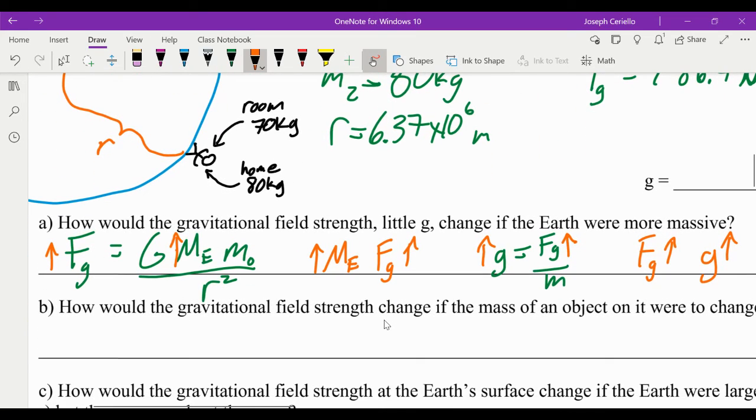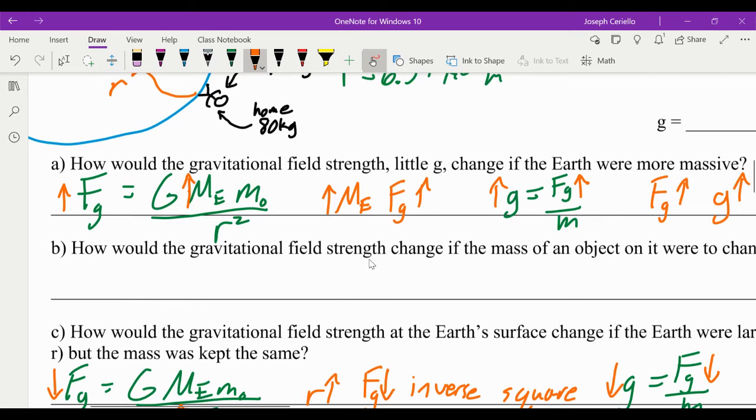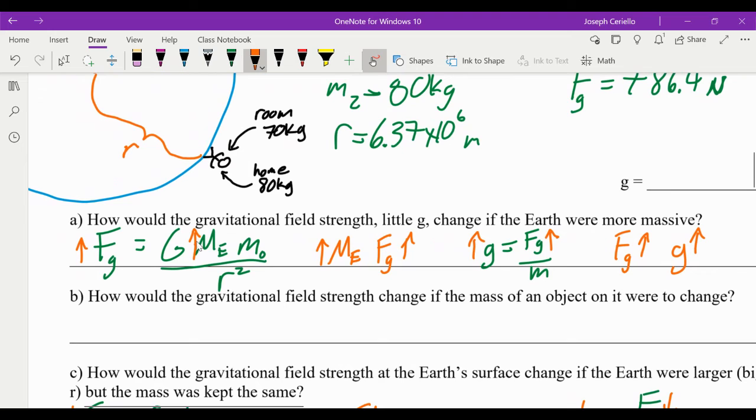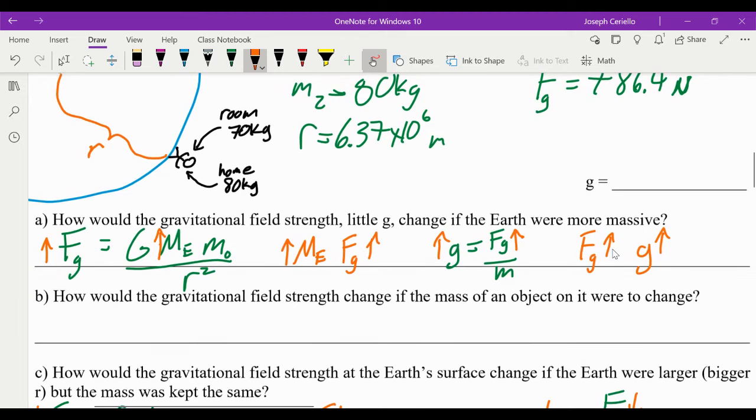So how would the gravitational field strength, little g, change if the Earth were more massive? So there are different ways to go about doing this one. This is like the longer but more reliable way to do it. So if the Earth were more massive, the force of gravity between the Earth and the objects would increase. So if the mass of the Earth increases, the force of gravity increases. Then using this equation, if the force of gravity increases, little g increases as well, the gravitational field strength.